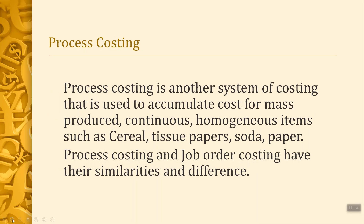So what is process costing? Process costing is another system of costing that is used to accumulate costs for mass-produced, continuous, homogeneous items such as cereal, tissue papers, soda, and papers. Anything that is continuous and homogeneous in nature in production is what we use process costing for.